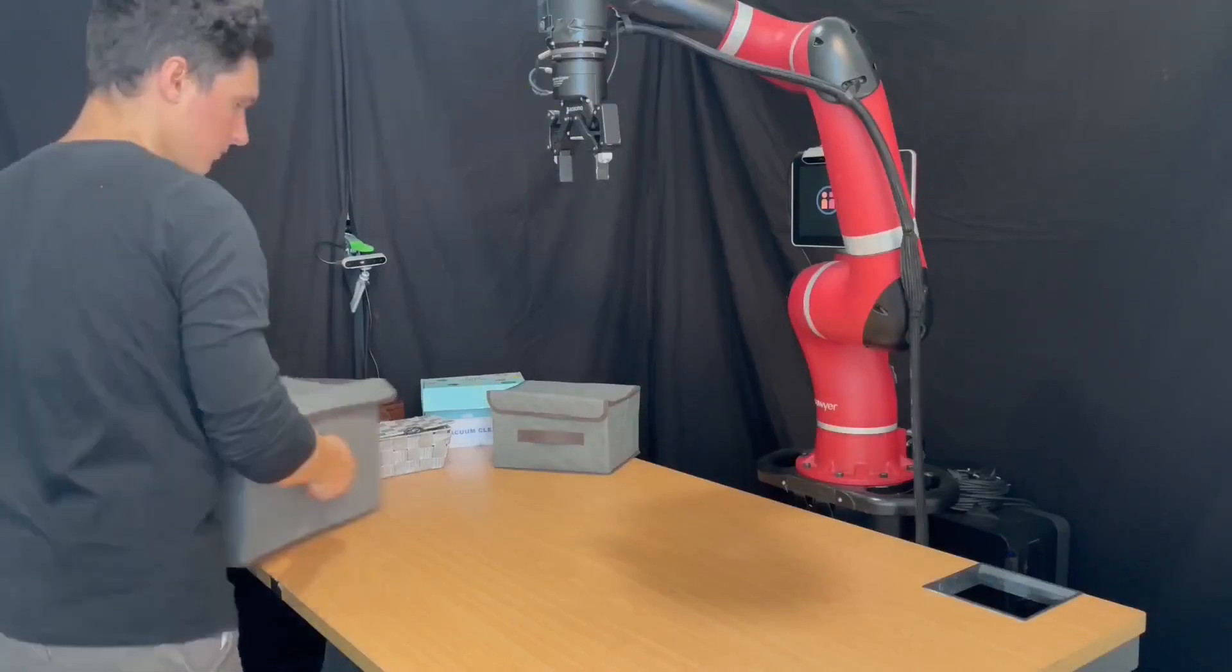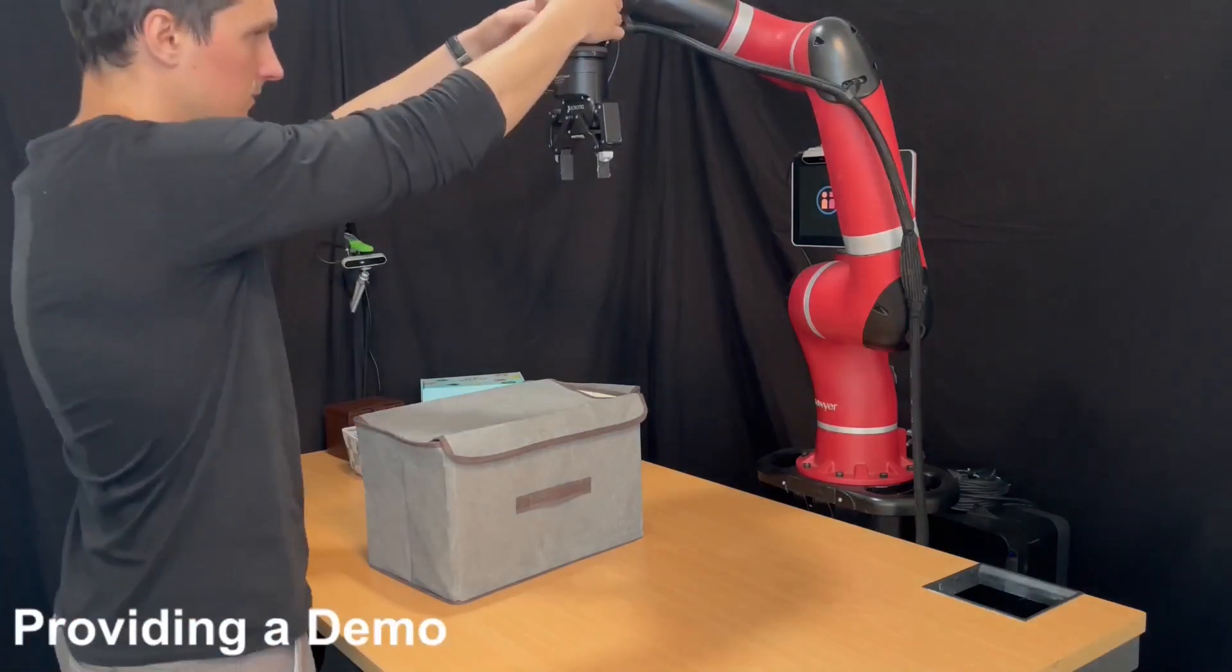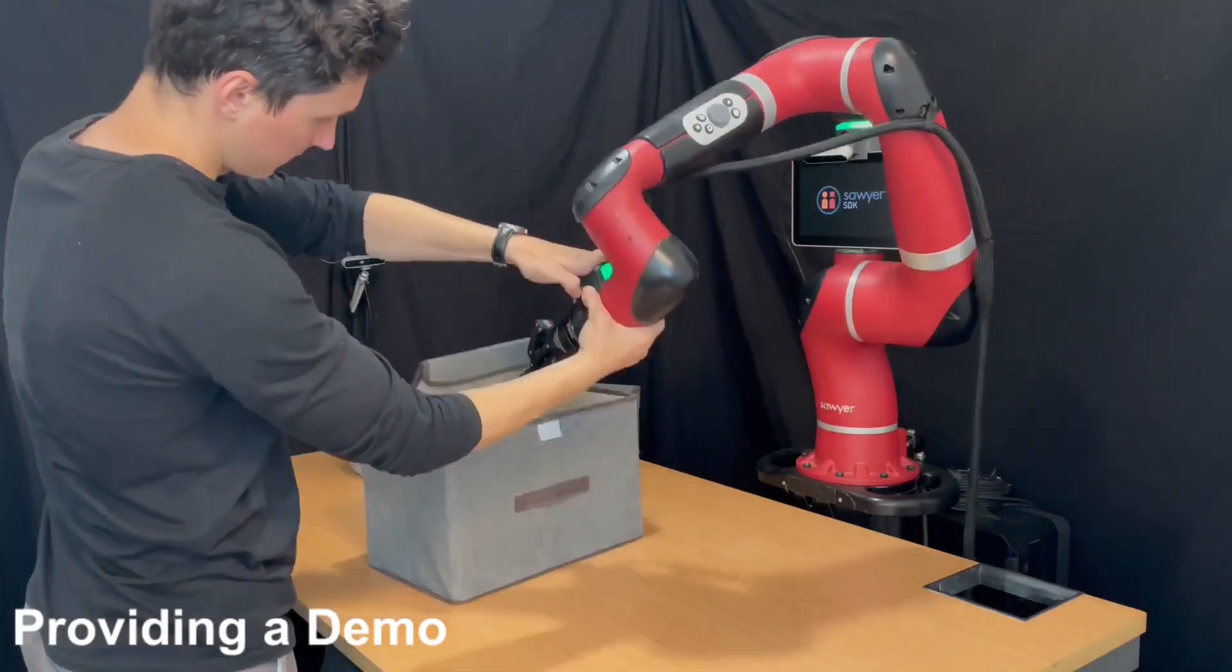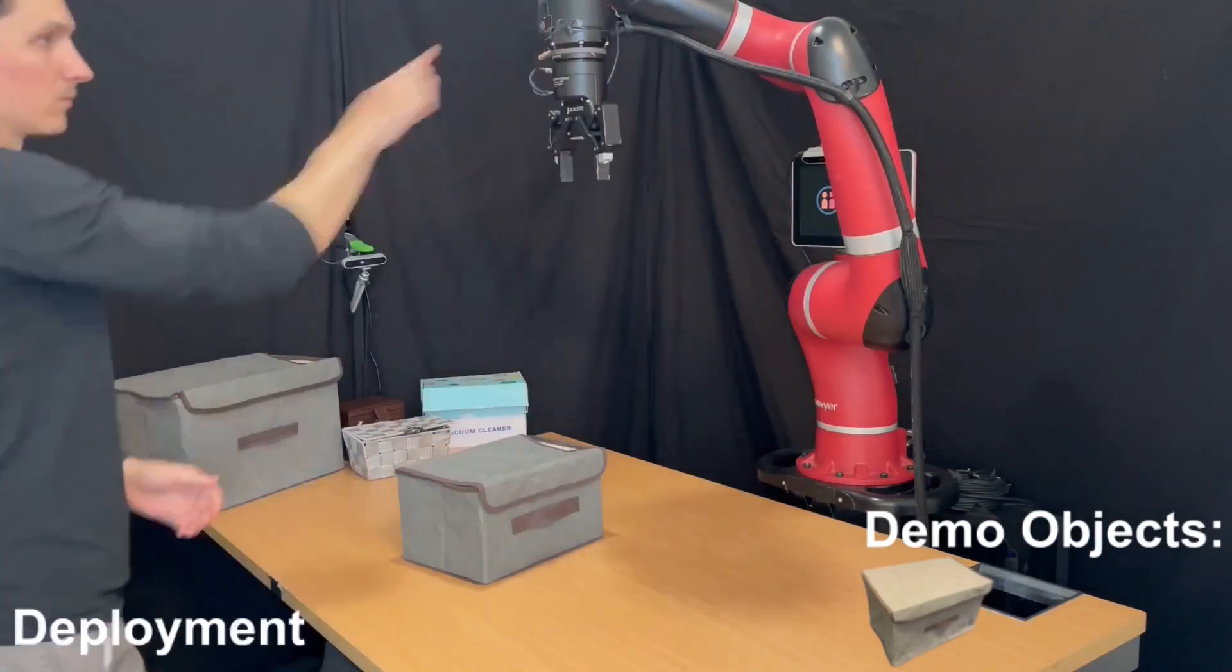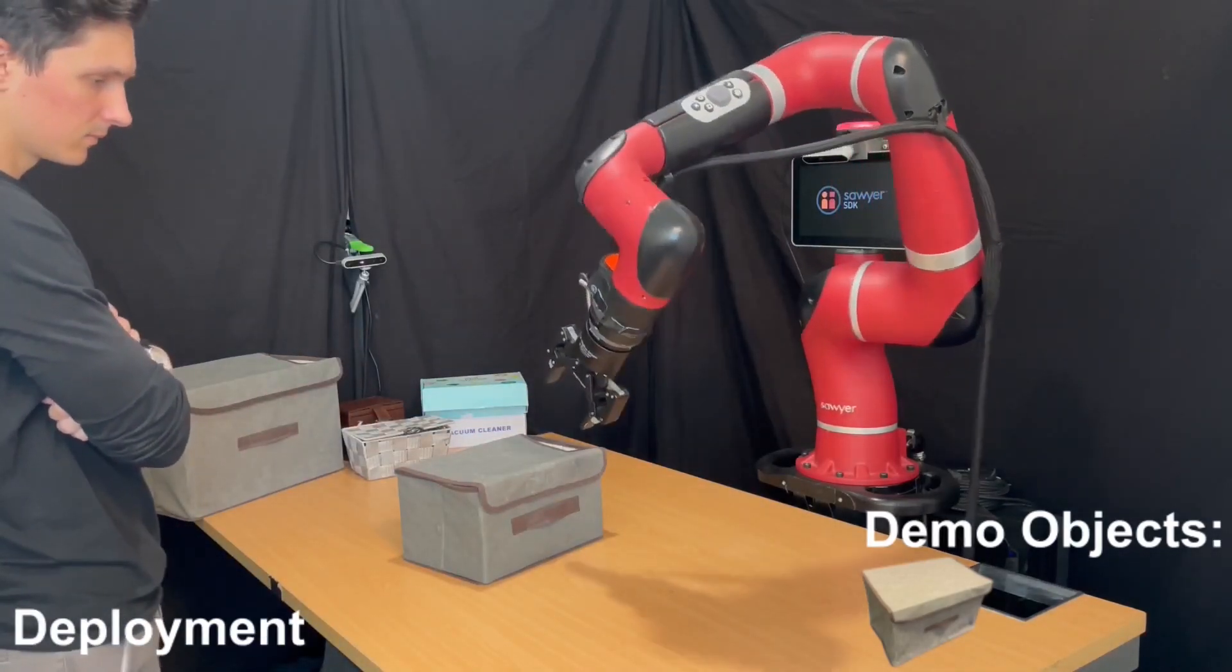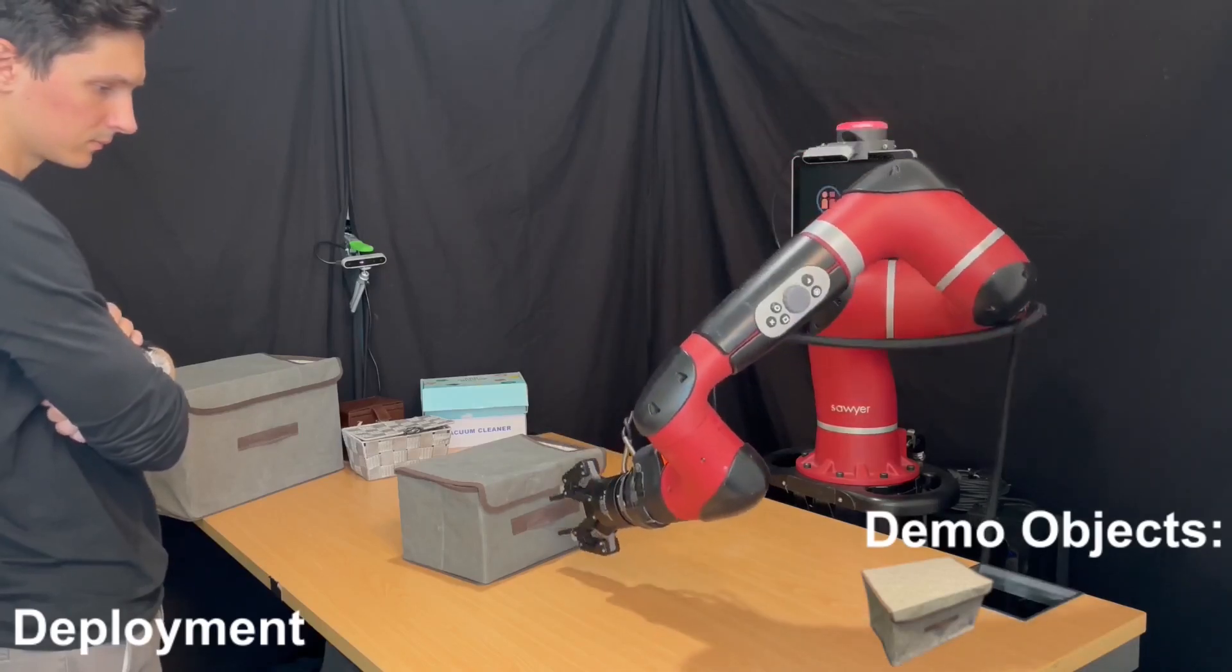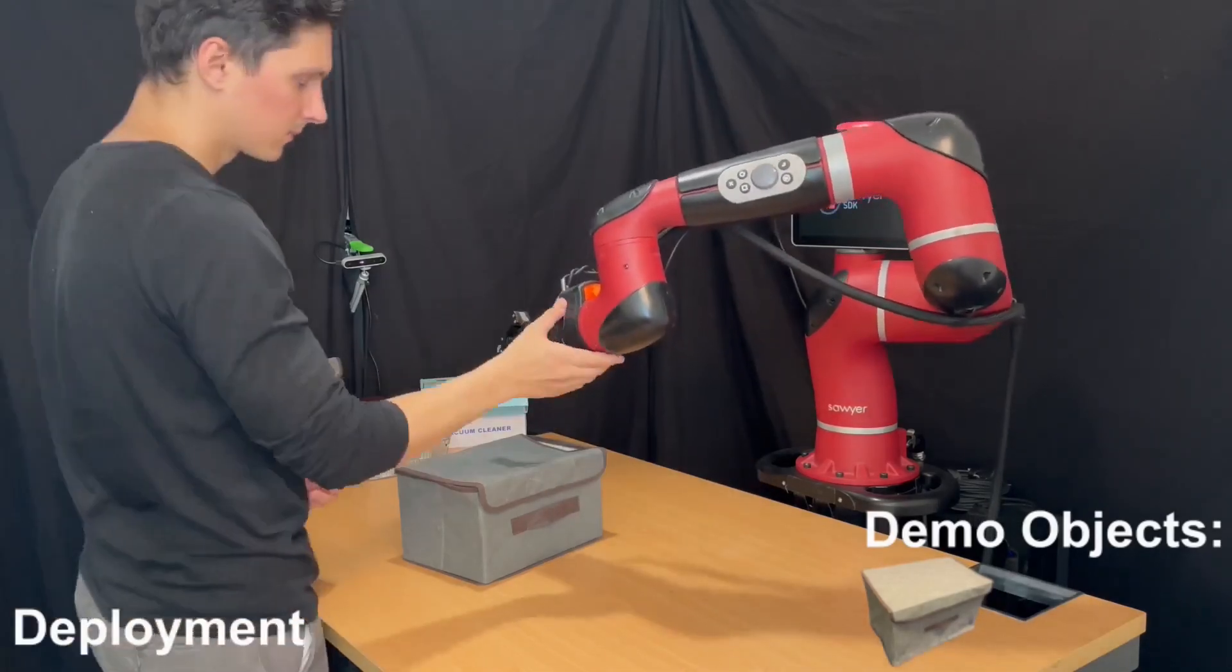While in previous examples we taught robots how to perform tasks using the same objects as in the provided demonstrations, the fact that our representation can inherently handle an arbitrary number of demonstrations as the context leads to a natural generalization to novel object geometries.